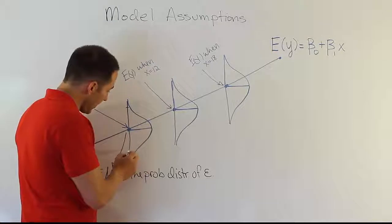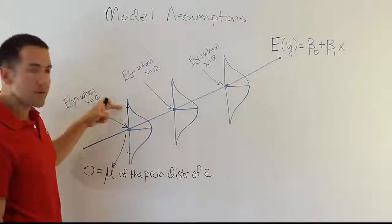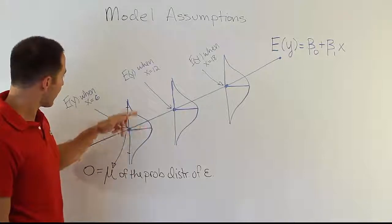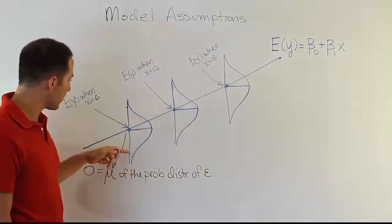So essentially what we can do at this point is say, if this marks like the two standard deviations above, two standard deviations below, then we're saying 95% of the observed values would be within this span.